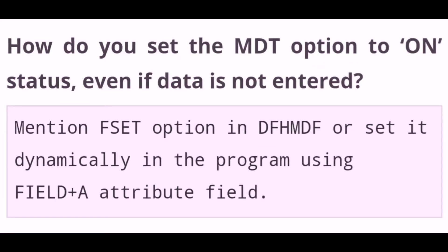How do you set the MDT option to ON status even if data is not entered? Mention the FSET option in DFHMDF, or set it dynamically in the program using field plus A attribute field.